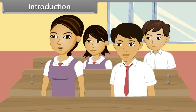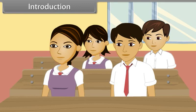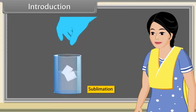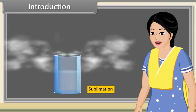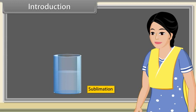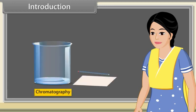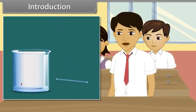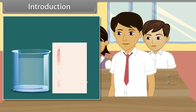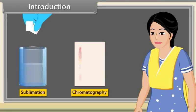Teacher, what is sublimation? Sublimation is the process in which solid directly converts to vapour state without passing through liquid state upon heating. Now can anybody tell me what is chromatography? Chromatography is a technique used to separate and analyse a mixture of chemicals. Very good, Aryan.